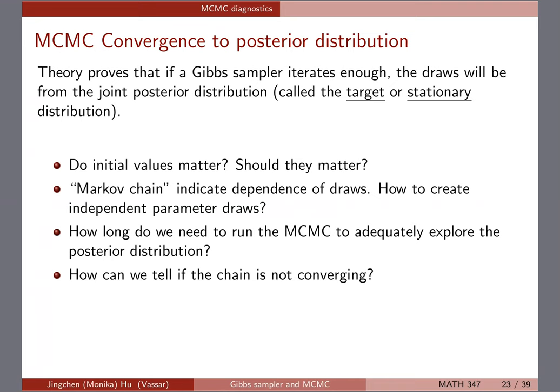MCMC — the first MC stands for Markov chain. We draw iteratively, meaning the next draw of mu depends on the previous draw of mu, creating dependency between draws. But eventually we want independent draws to summarize, because the second MC in MCMC is Monte Carlo. So we have to figure out how to create independent draws.